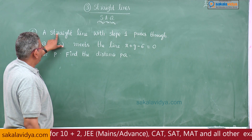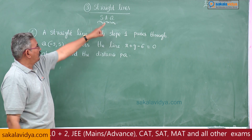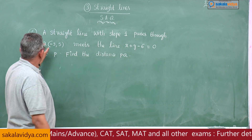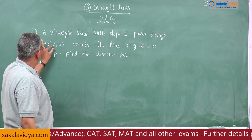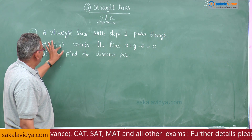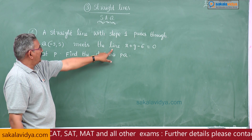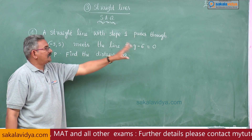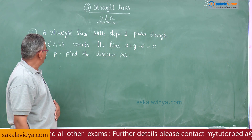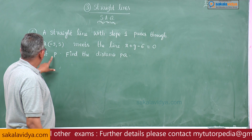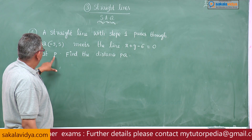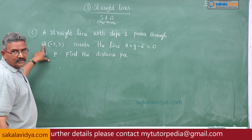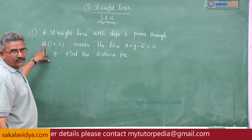A straight line with slope 1 passes through minus 3 comma 5, meets the line x plus y minus 6 equals 0 at P. The distance between this P point and Q point you are asked to find out.